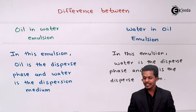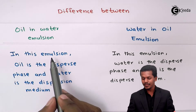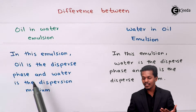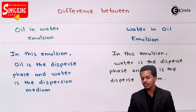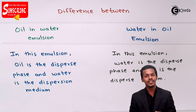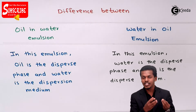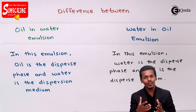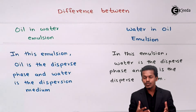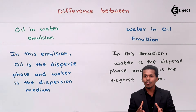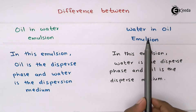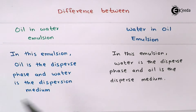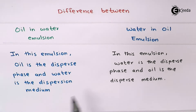The first difference: in an oil-in-water emulsion, the oil is the dispersed phase and water is the dispersion medium — as the name itself suggests, oil is dispersed in water. In a water-in-oil emulsion, the water is the dispersed phase and oil is the dispersion medium.